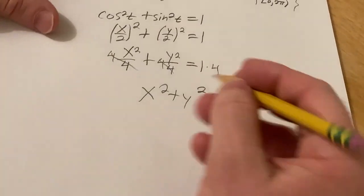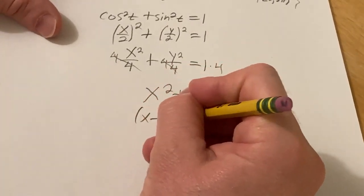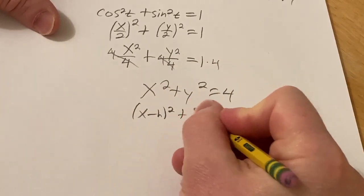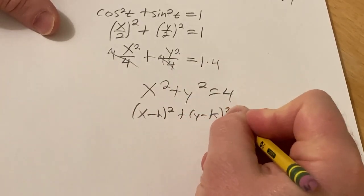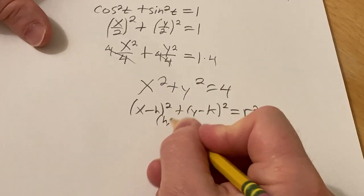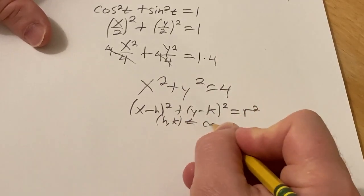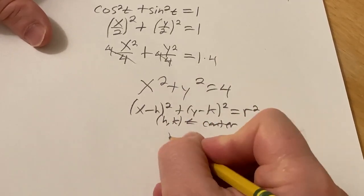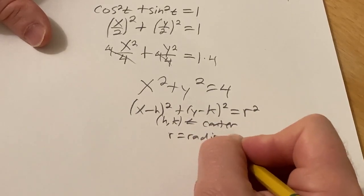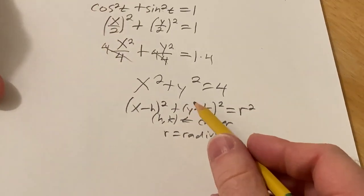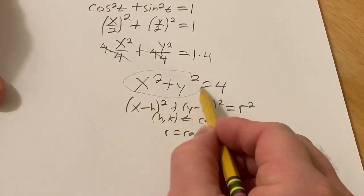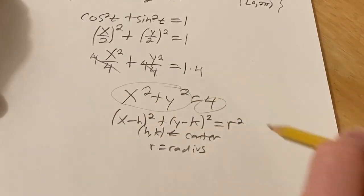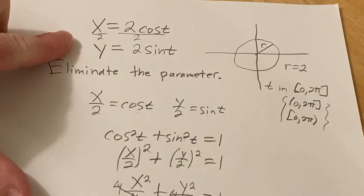So this fits the form of a circle. Recall a circle has this form: x minus h squared plus y minus k squared equals r squared, where (h,k) is the center of the circle and r is the radius. And so in our particular case h and k are both 0, so we get a circle centered at the origin with radius 2, and yeah, that's what these give you.